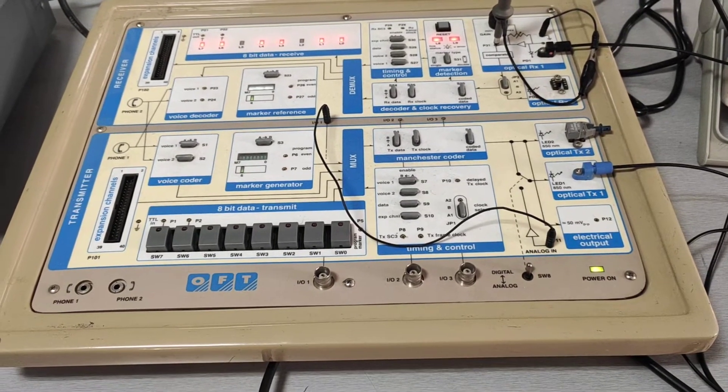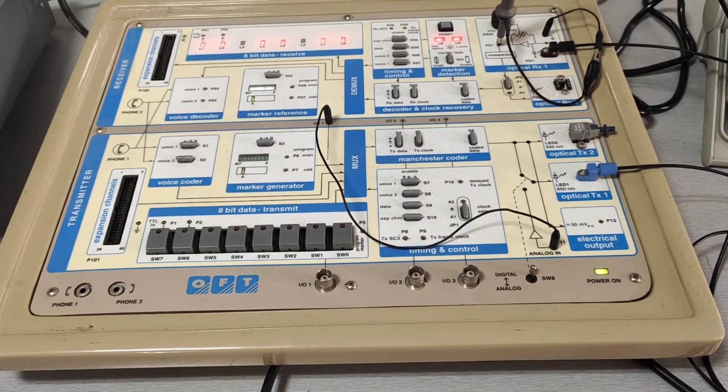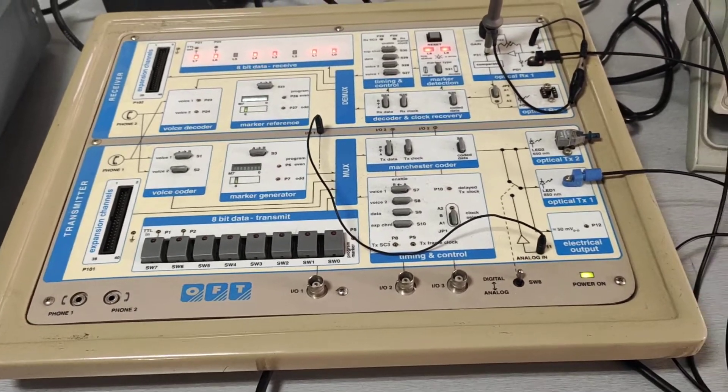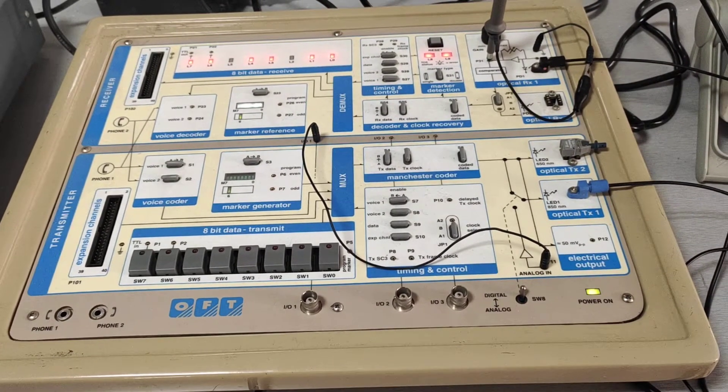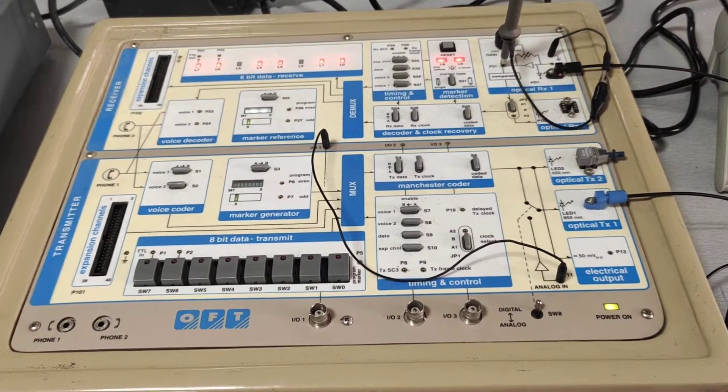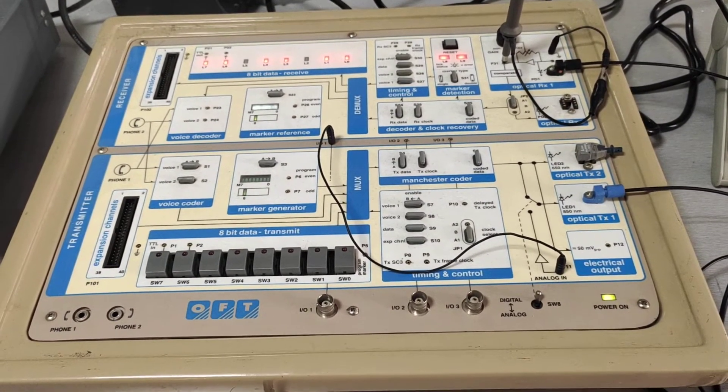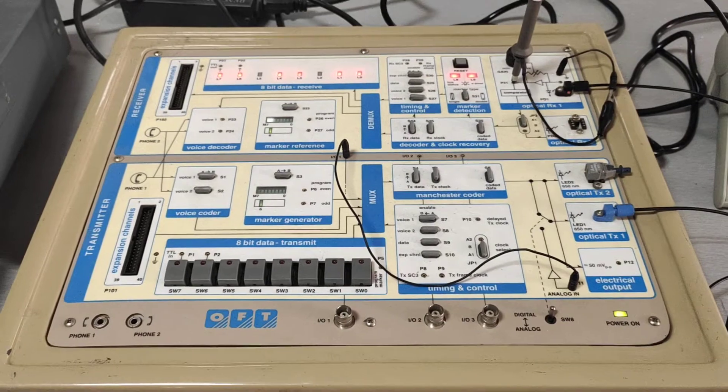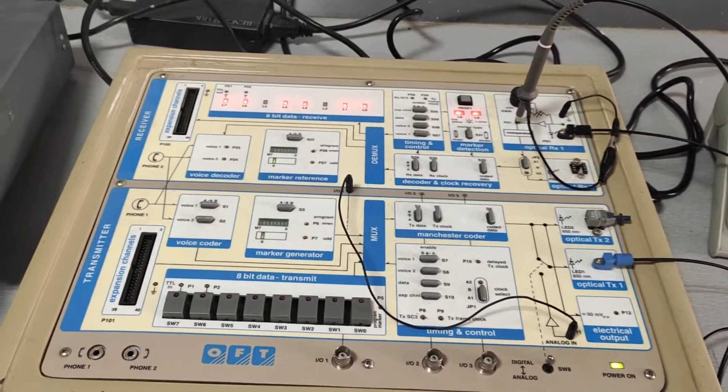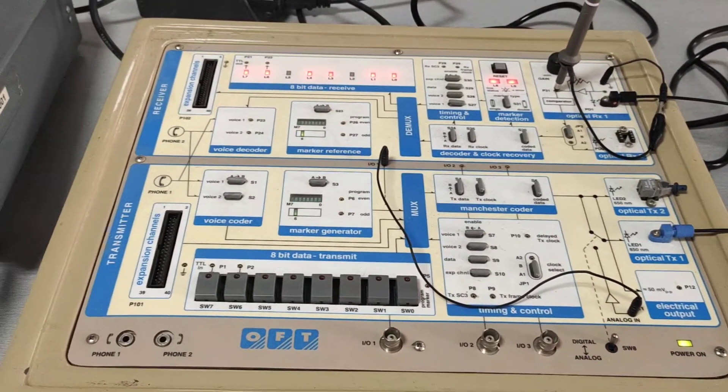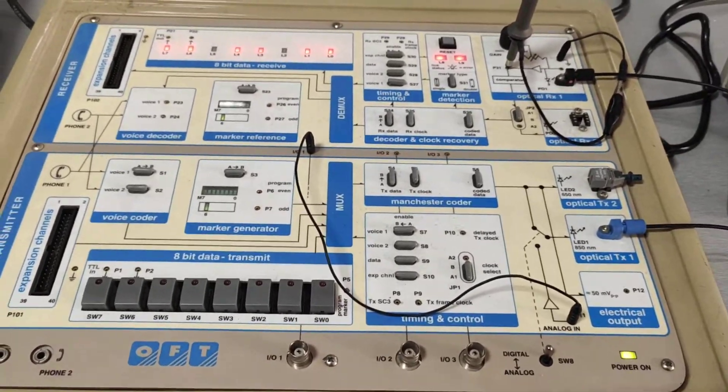Dear Learners, welcome to the course Advanced Communication Laboratory. In this video, I will explain how to do the experiment on analog and digital communication link. It is one of the optical fiber experiments. We are going to do the experiment with the help of this optical fiber trainer kit. Let us start with the experiment.